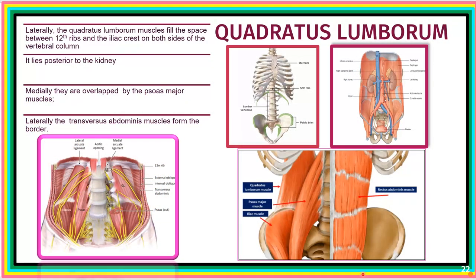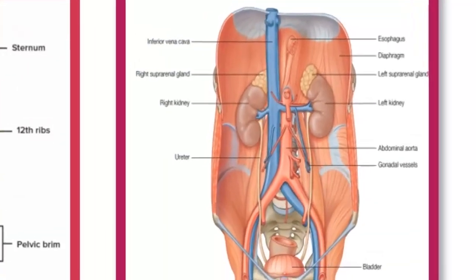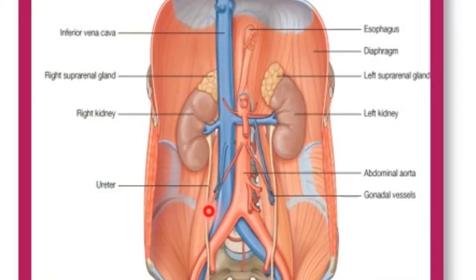The next muscle is quadratus lumborum. Looking at the image, we can see the psoas major and lateral to it we'll be seeing this layer of muscle. The layer medial to — and lateral to — psoas major is called the quadratus lumborum. Here is the psoas major again, and lateral to it is the quadratus lumborum.